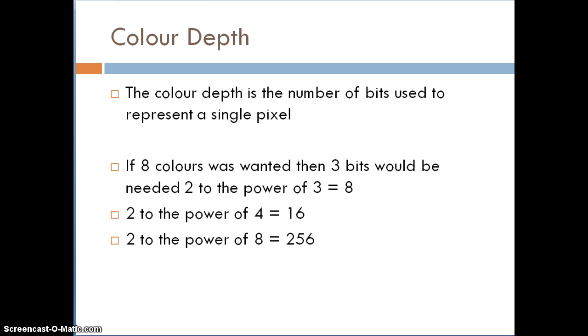This allocating a number of bits per pixel is known as the color depth. So the color depth is the number of bits used to represent a single pixel. If eight colors was wanted, then we would need three bits. Remember your powers of twos. Two to the power of three equals eight. Two to the power of four equals sixteen, which means with four bits, we can use sixteen colors. Two to the power of eight equals 256. So if you wanted 256 colors, you would allocate eight bits per pixel.